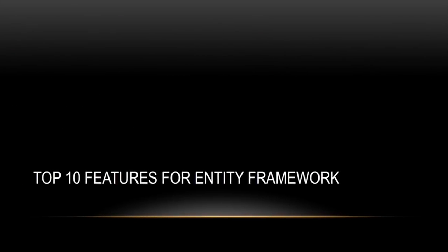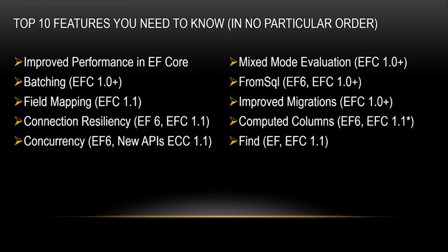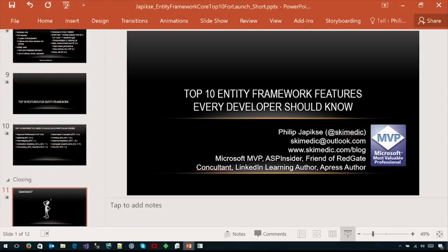Here are the 10 features we'll cover: improved performance, batching of calls, field mapping, connection resiliency, concurrency, mixed mode evaluation, FromSQL for using raw SQL to populate models, improved migrations, computed column support, and Find. Migrations - I know several of you just groaned having been burned by migrations in the past - are much, much better in EF Core. That's the last slide; we're going to dive right into code.